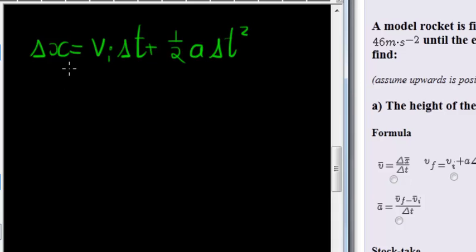So let's write out our equation here at the bottom. We have that delta X is equal to initial velocity times delta T plus a half times acceleration times delta T squared.